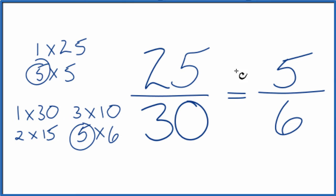So we've simplified the fraction 25 thirtieths down to five sixths, and we can't reduce this any further. These are equivalent fractions, five divided by six and 25 divided by 30. They give you the same number.